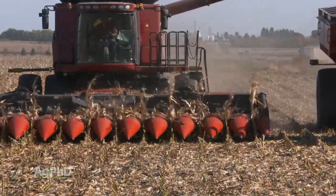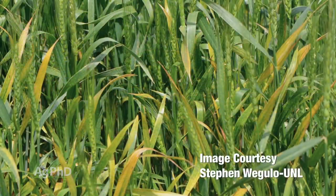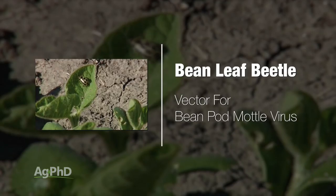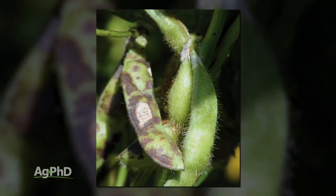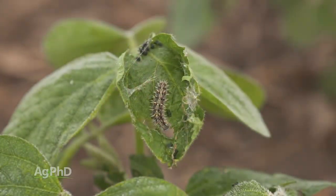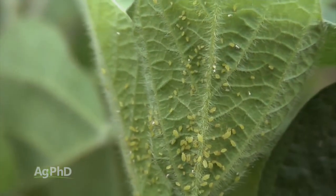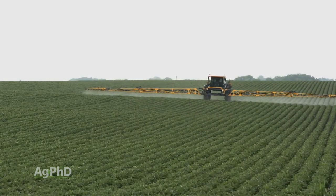The other thing farmers will look at is some bugs can be a vector for disease, meaning they are carrying disease with them. Many times those diseases are not something that farmers want to see in the field, like bean pod mottle virus or barley yellow dwarf. If you see insects that potentially are carrying disease, many times that throws the economic threshold right out of consideration entirely, because the disease could run rampant through the field for the rest of the season.